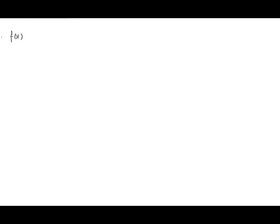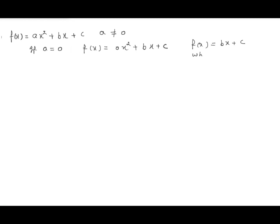Now I'm going to explain why we write a is not equal to 0. If a is equal to 0, then f(x) becomes 0·x^2 plus bx plus c, which simplifies to bx plus c, which is a linear polynomial.